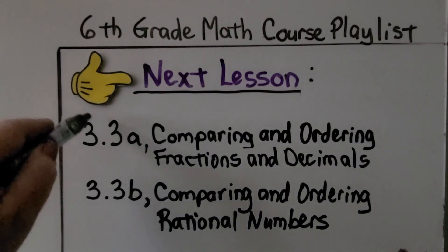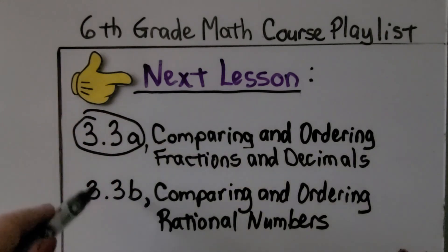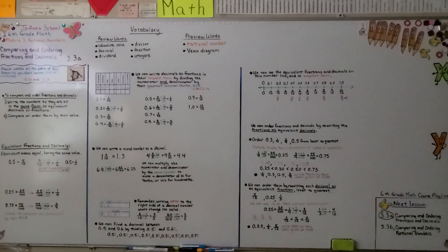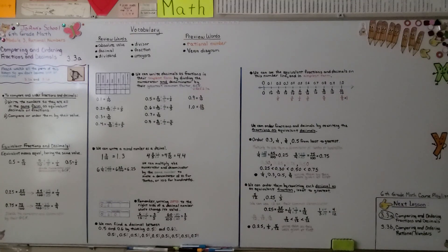We've now completed this lesson and will move to the second part, where we compare and order rational numbers. You'll do okay if you completely understand greatest common factors and common multiples. If you're a little rusty with those, go back and look at the links in this description to watch those videos before moving forward. Have a wonderful day — hit the like button if you understood what was taught, and I'll see you next time.